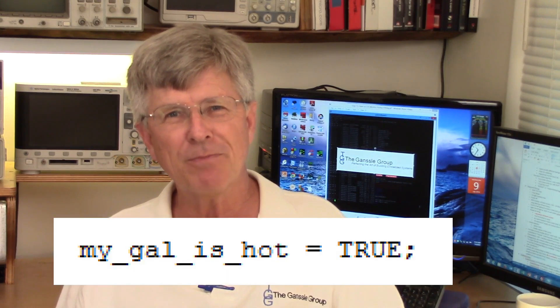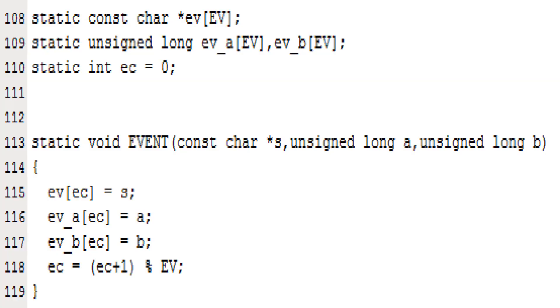There are some variable names you see which are really baffling. This is from Linux. This is not a contest to see how few characters you can type. And where are the comments? What's the documentation on those parameters? What do they mean? This is awful stuff, and whoever wrote this code should be banished from the ranks of programmers.